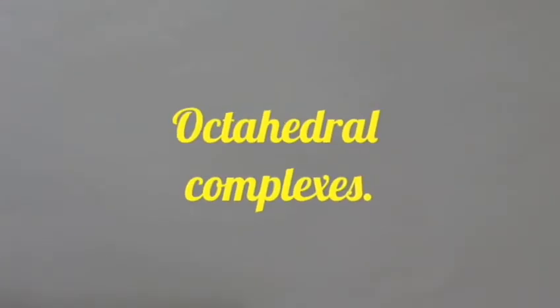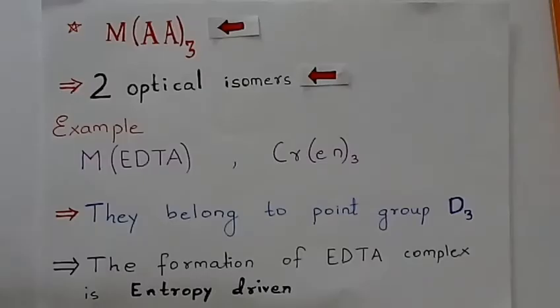Let's start with octahedral complexes. Complexes with the general formula MAA3, where M is a metal and AA is a bidentate ligand, have two optical isomers. They belong to the point group D3 and the formation of EDTA complex is entropy driven.